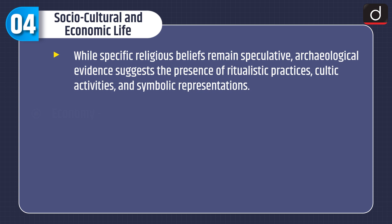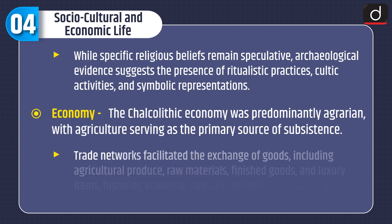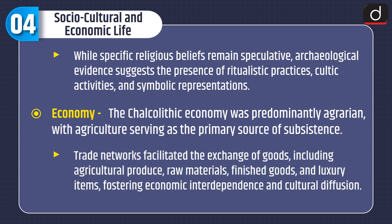While specific religious beliefs remain speculative, archaeological evidence suggests the presence of ritualistic practices, cultic activities, and symbolic representations. The Chalcolithic economy was predominantly agrarian, with agriculture serving as the primary source of subsistence. Trade networks facilitated the exchange of goods including agricultural produce, raw materials, finished goods, and luxury items, fostering economic interdependence and cultural diffusion.